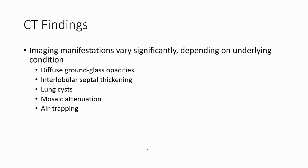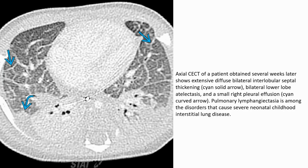CT findings: imaging manifestations vary significantly depending on the underlying condition. We can see diffuse ground-glass opacity, interlobular septal thickening, lung cysts, mosaic attenuation, and air trapping. This contrast-enhanced CT of a patient shows extensive changes with bilateral interlobular septal thickening.